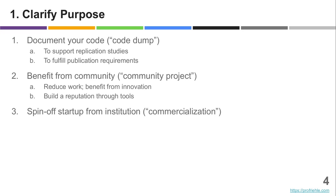Having helped many colleagues, the main purposes of open sourcing research software are these three. You either want to document your code and make it available because it's a requirement — maybe to support replication studies, or a publication outlet requires that your code is available. That's a code dump: the code is in some sense dead, you're not going to develop it further, you're just showing it to the world for some purpose.